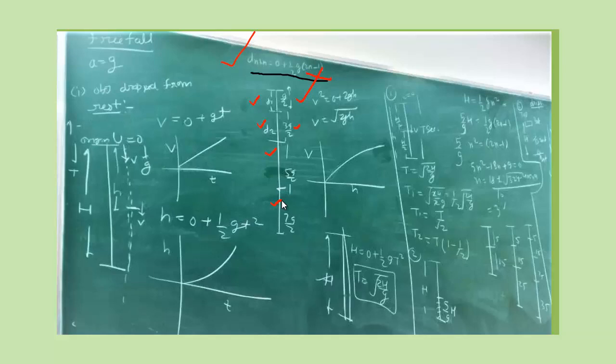So in 1 second intervals, the distance covered by the particle in free-fall motion starting from rest would be in the ratio of 1 is to 3 is to 5 is to 7 is to 9, consecutive odd numbers starting from one. This is Galileo's law of odd numbers.